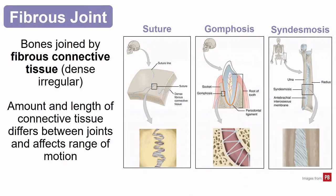Fibrous connective tissue connects the bones of a fibrous joint, so there is significant variability in the mobility of these types of joints depending on the organization of the connective tissues. The amount or length of connective tissue can affect joint functioning. The three subtypes are a suture, gomphosis, and a syndesmosis.